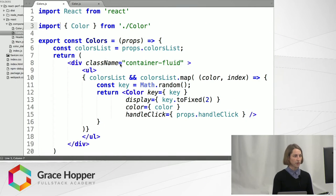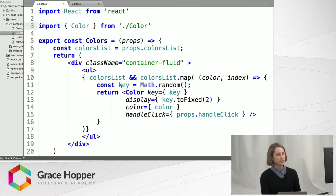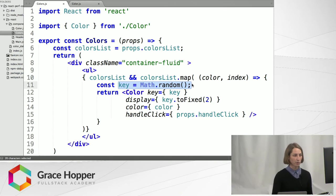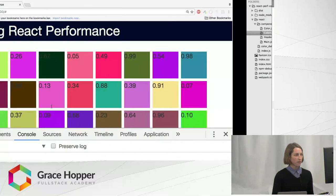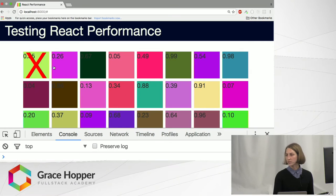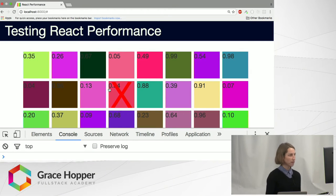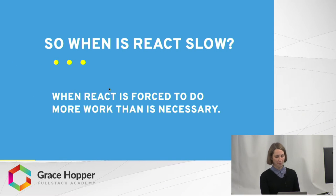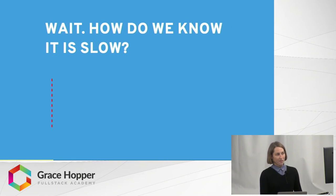I just want to quickly show you the code. It's just a UL, and it maps through and makes a color component, and gives it a key value of Math.random. This is the essential part we're going to talk about — this key value. Right now you see these random numbers on the left-hand side, and that's the key value being displayed there.